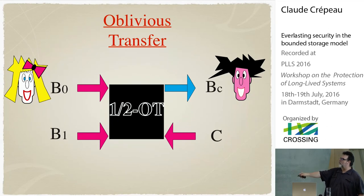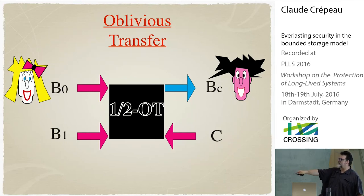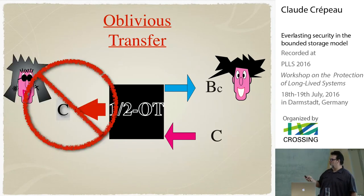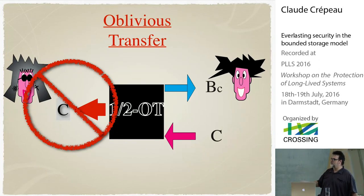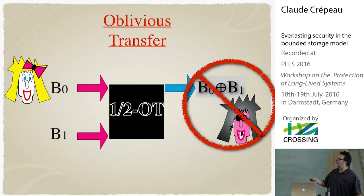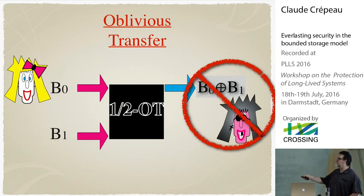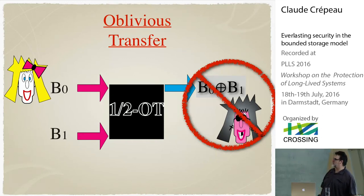The version of oblivious transfer we were after is a situation where Alice has two bits, B0 and B1. Bob has a selection bit C, and he obtains the bit B sub C. We wish that even if Alice is dishonest, she will not find out what the choice bit of Bob is. Moreover, even if Bob is dishonest, not only do we not want him to find out what both bits are, but in particular we do not want him to find out the exclusive-or of the two bits. This is a simple but very powerful definition that captures exactly the difficulty of achieving oblivious transfer.